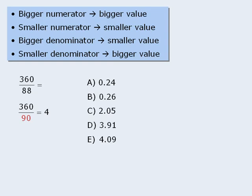This means we can already eliminate answer choices A, B, and C, since they are not remotely close to 4. Since the denominator 88 is smaller than the other denominator, 90, we can apply this rule to see that the value of 360 over 88 must be bigger than the value of 360 over 90. As such, 360 over 88 will be slightly more than 4. Since the answer must be slightly more than 4, the answer here must be E.